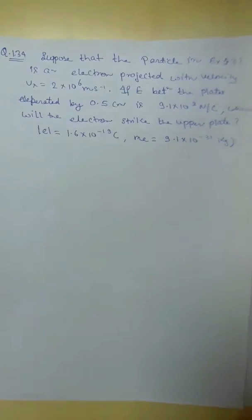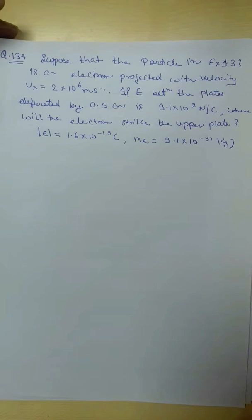Hello friends, let's see the last question of this exercise which is 1.34. Suppose that the particle in the previous exercise question 1.33 is an electron projected with the velocity Vx 2 into 10 to 6. If E between the plates separated by 0.5 cm is 9.1 into 10 to 2 N per coulomb, where will the electron strike the upper plate?